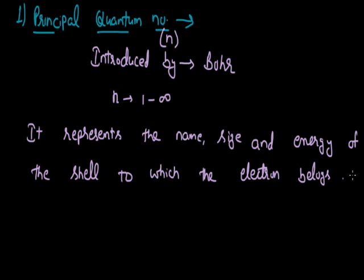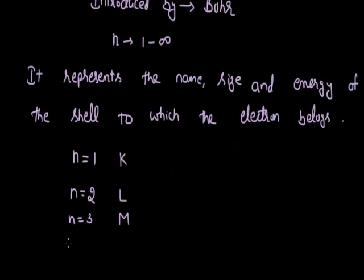Starting with the name of the shell — with the help of this principal quantum number we can know the name of that shell. If we take the minimum value N = 1, this shell is the nearest shell to the nucleus and is designated by the symbol K. The next shell, indicated by N = 2, is designated by the symbol L. For N = 3, the symbol is M. For N = 4, the symbol is N. Moving in alphabetical order, N = 5 is O and N = 6 is P, and so on.